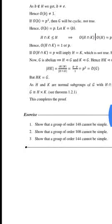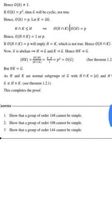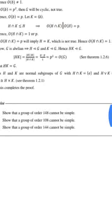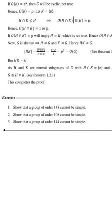The order of H intersection K divides the order of H, which equals P. Hence the order of H intersection K equals 1 or P. If the order of H intersection K equals P, that would imply H equals K, which is not true. Hence the order of H intersection K equals 1.